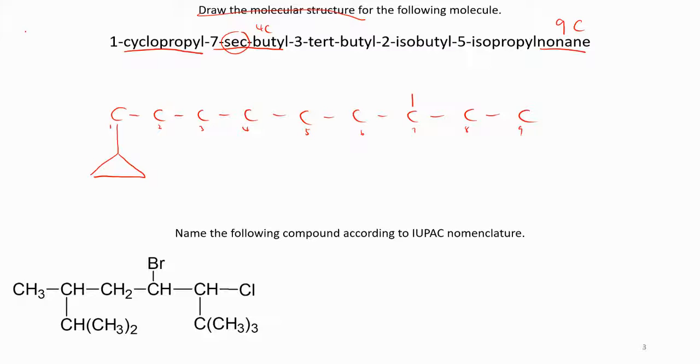So if you have to start to understand or remember butyl 4 carbon. This one is secondary carbon. This is also a secondary carbon. So you can attach to either this carbon or another carbon. Because it is the same, it will be sec-butyl. Then next one, carbon number three is tert-butyl.